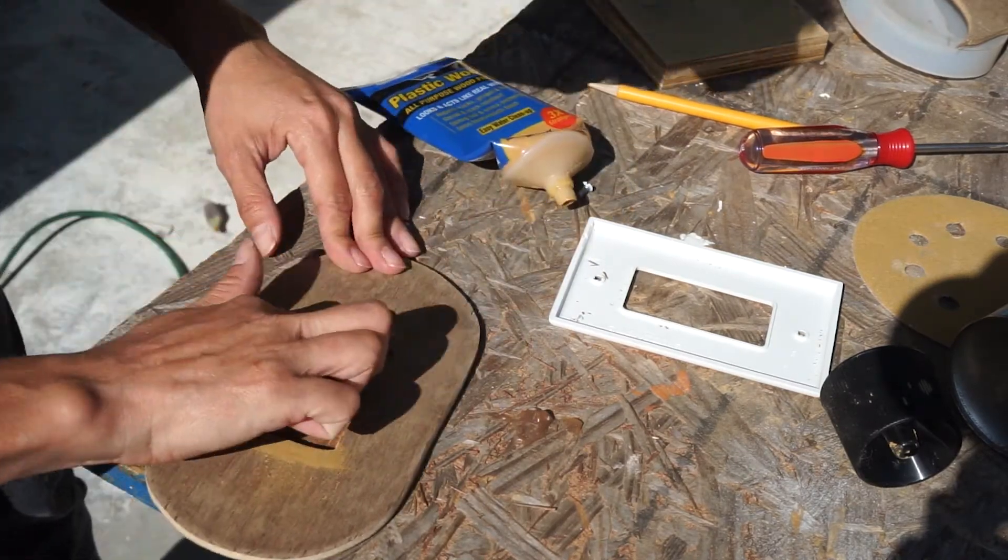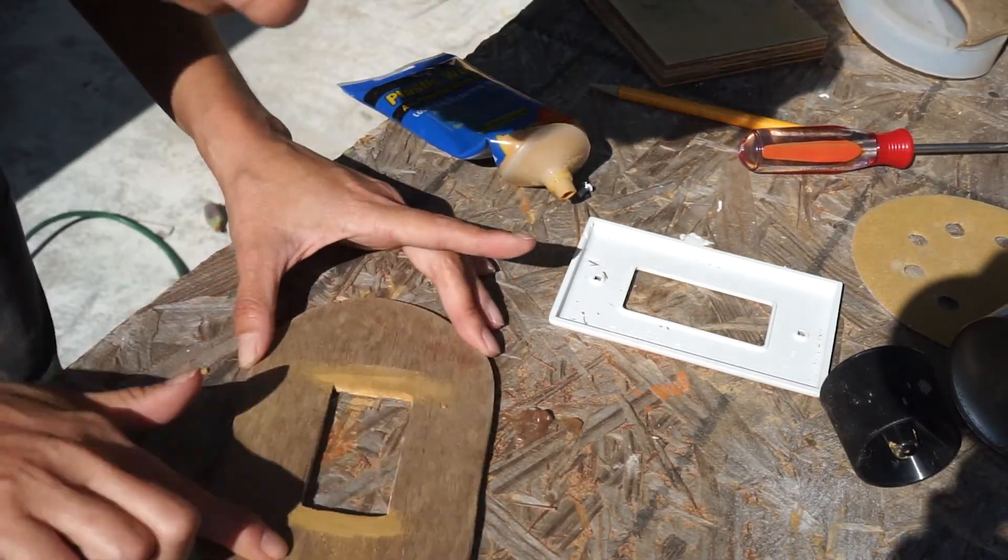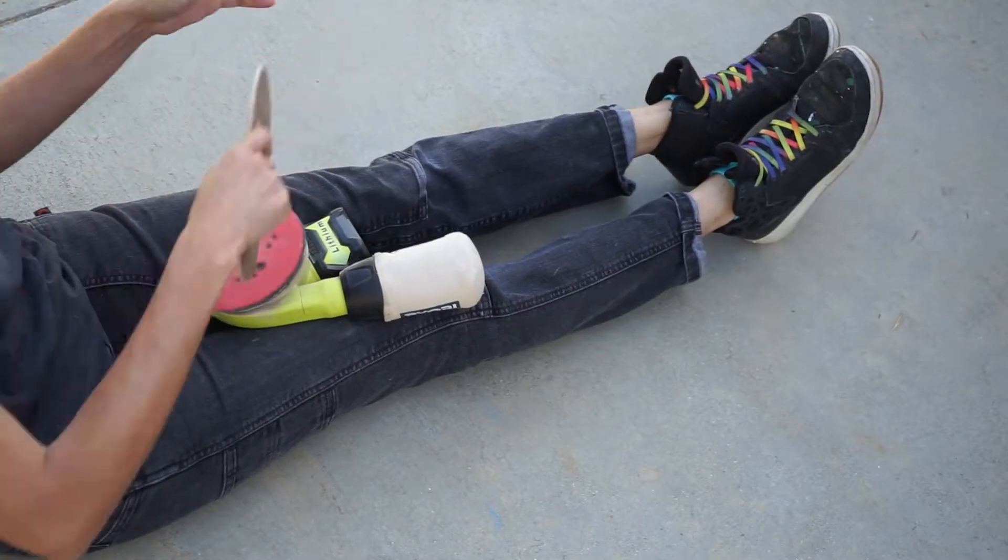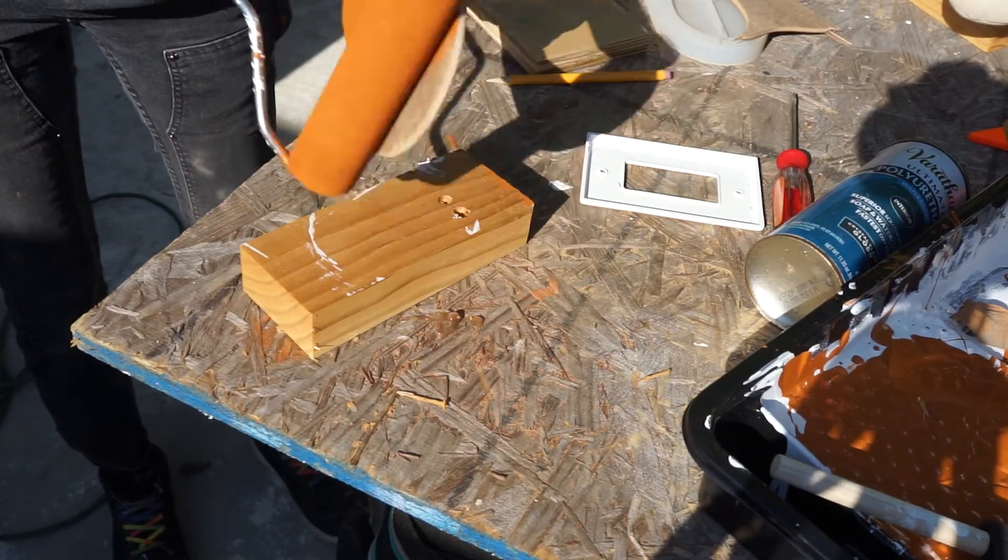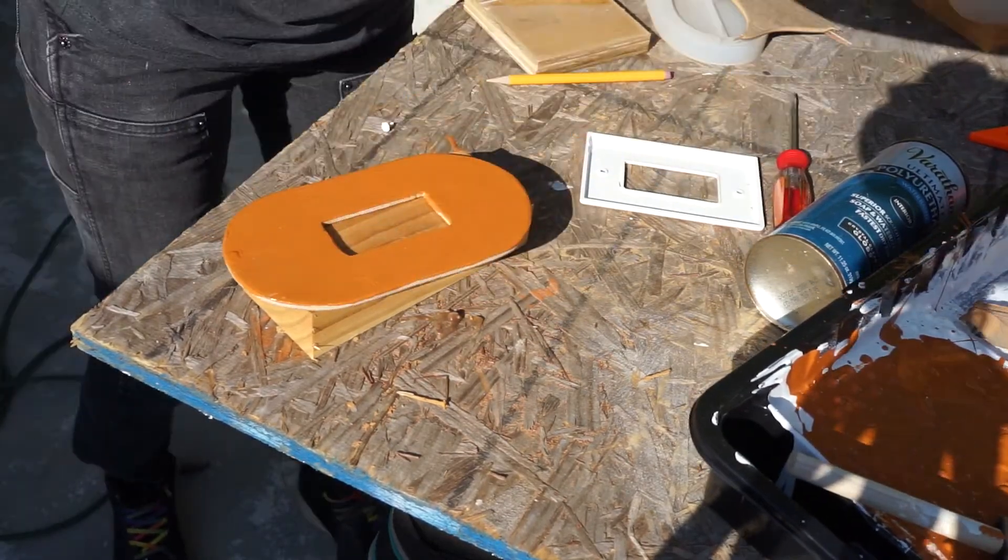I then took some wood filler and filled in any gaps that looked weird, then sanded everything down so it was nice and smooth. Finally, I painted over the whole thing so it would match my dresser.